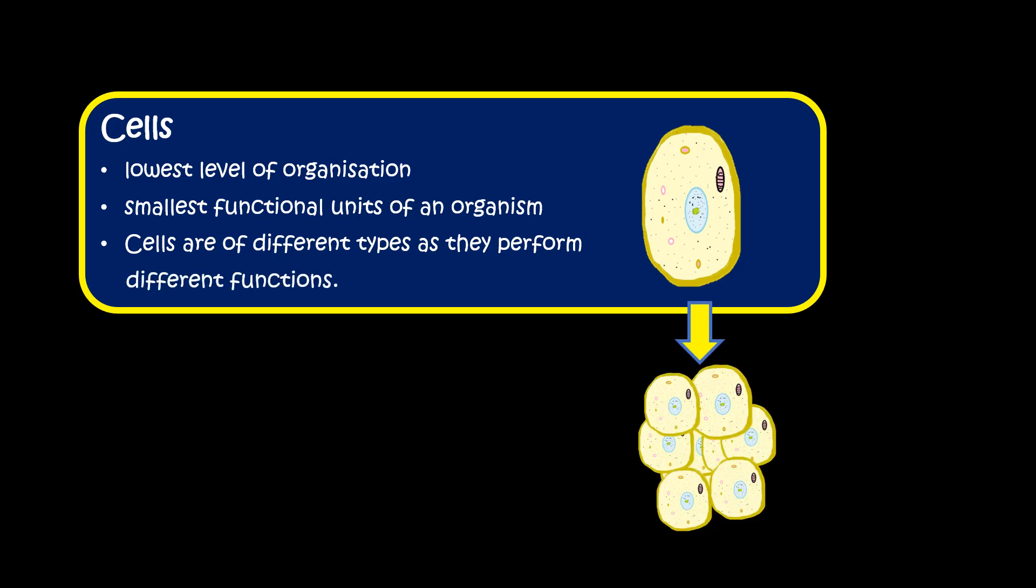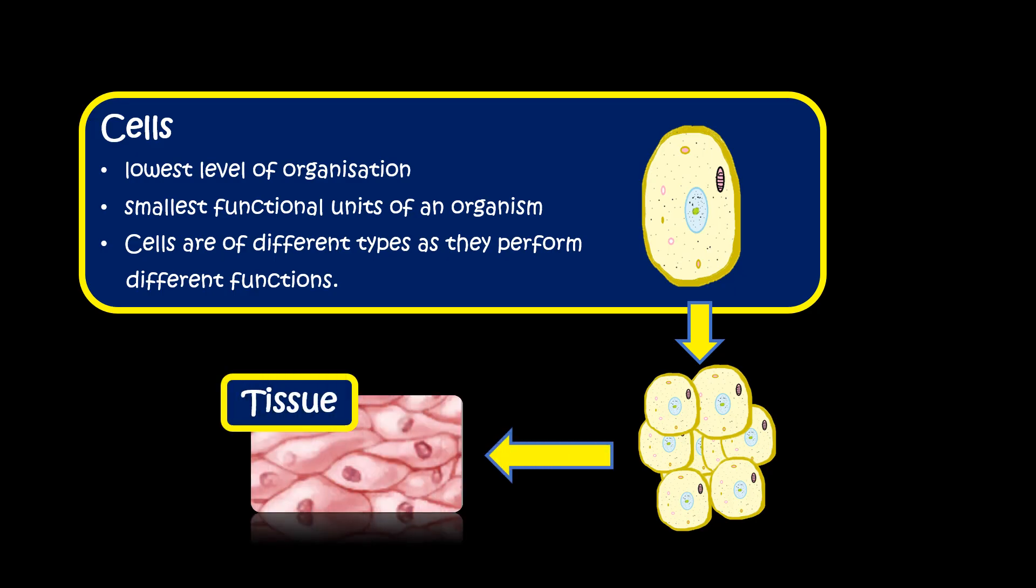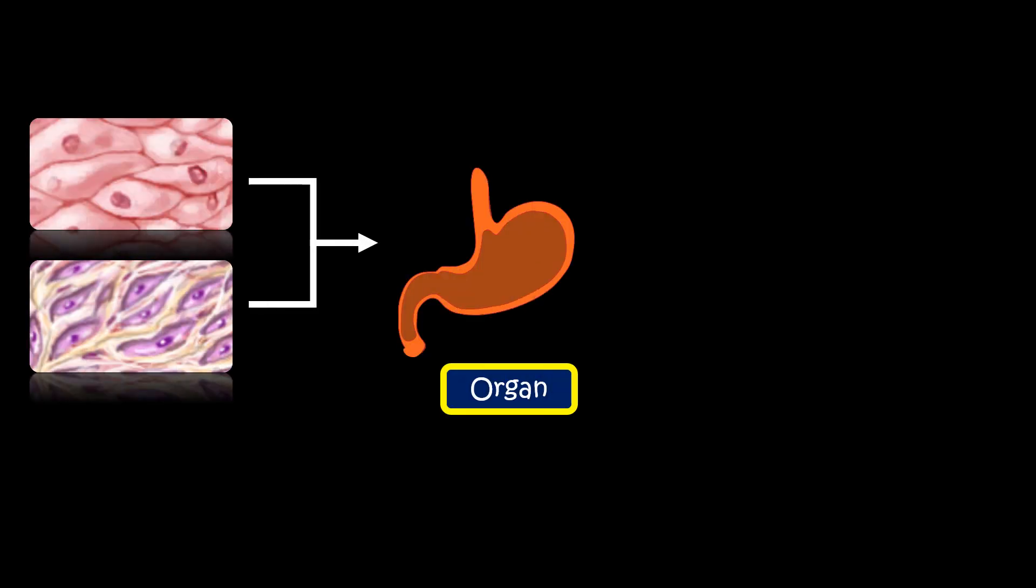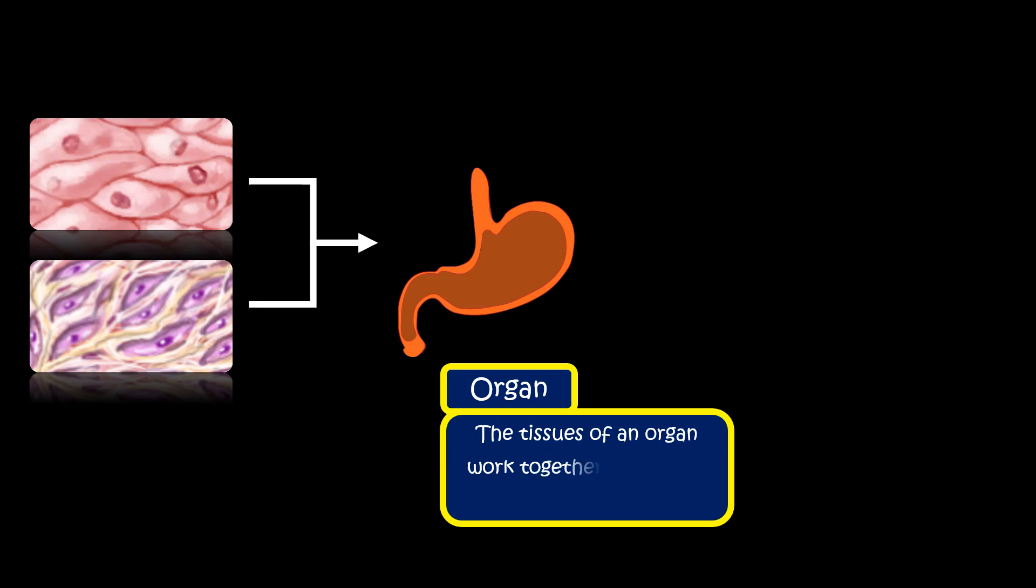A large number of similar types of cells group together to form a tissue. One or more types of tissues combine to form an organ. The tissues of an organ work together to perform a specific function.